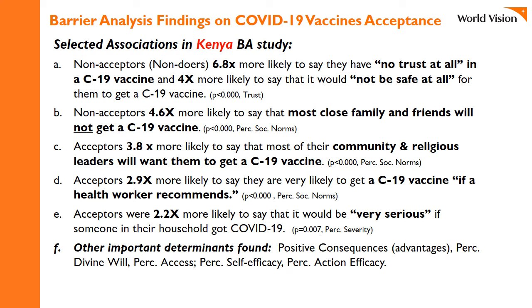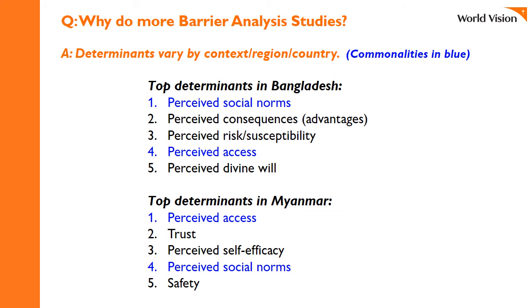I've done some studies where we only found one or two important findings — for example hand washing in Mozambique, just unavailability of soap. When that happens, it basically means maybe you can have your strategy center on only one or two messages or activities and really change that behavior. This is going to be a lot more difficult to change because there's a myriad of reasons why people aren't wanting to get the vaccine — it's social norms, it's how you think about the disease, it's whether you trust the vaccine or not. This means we're going to have to have a very robust information campaign. So if we have data on six countries, why do we need to do more barrier analysis studies? The main reason is that these determinants vary by country and context — you can't assume that you'll find the same determinants where you work, so we need more data.